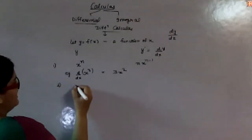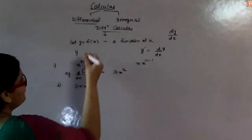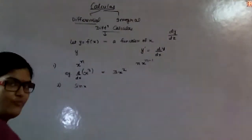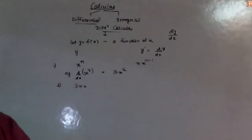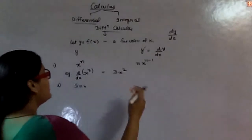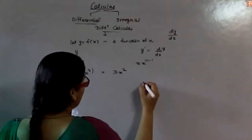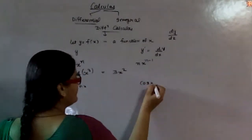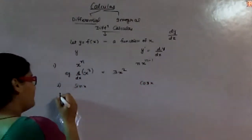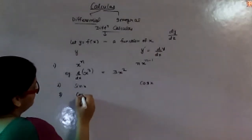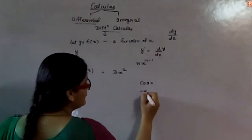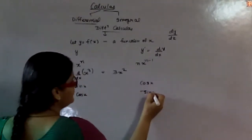Secondly, the differentiation of trigonometric functions: if y is equal to sin x, then the differentiation of sin x is cos x. These are some standard formulas. The differentiation of cos x is minus sin x.